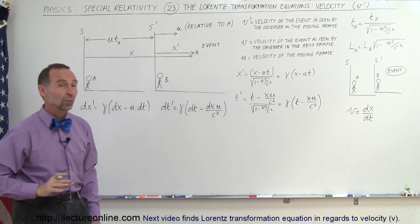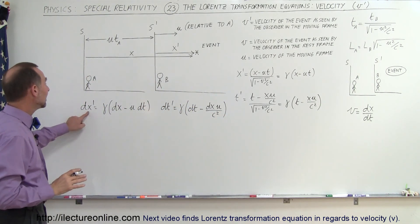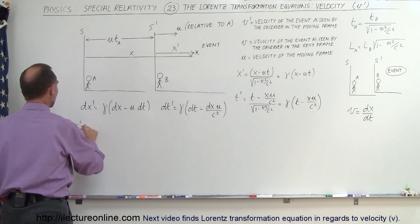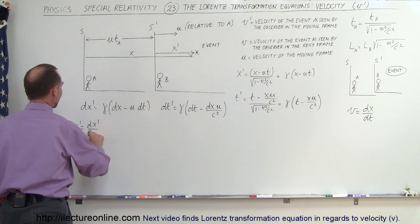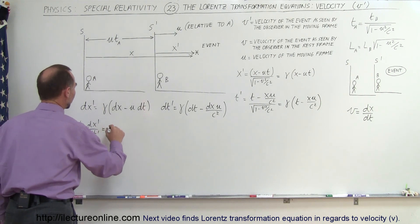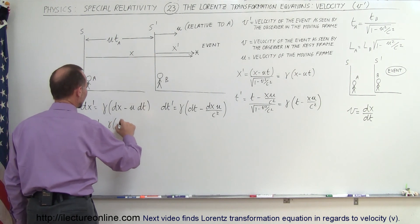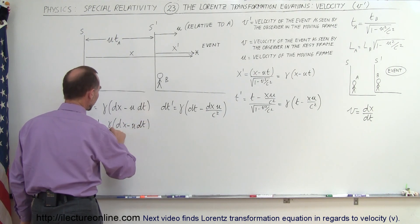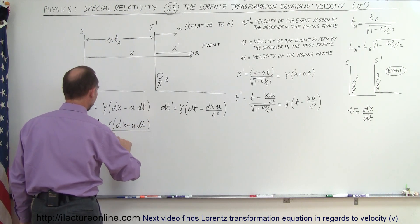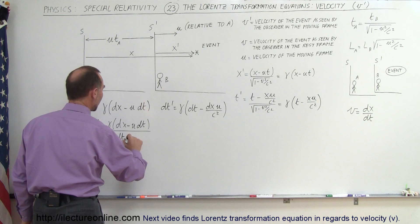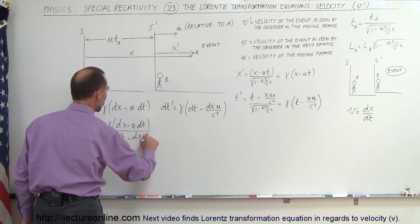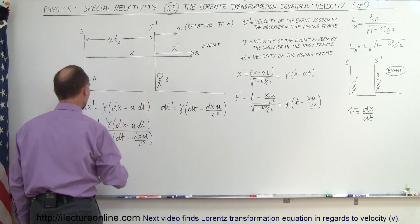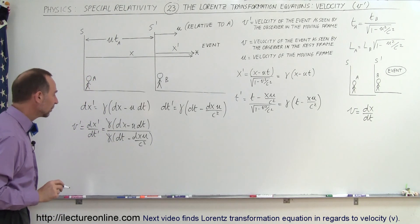Now we have the two differential equations. We can divide DX' by DT' to get V'. So V' would be equal to DX' divided by DT', which is equal to gamma times DX minus U DT, divided by gamma times DT minus DX times U over C squared. Right away you can see that the gammas cancel out, so now we're getting a little bit closer.